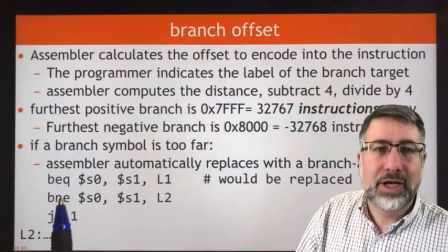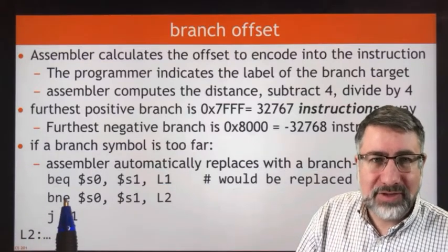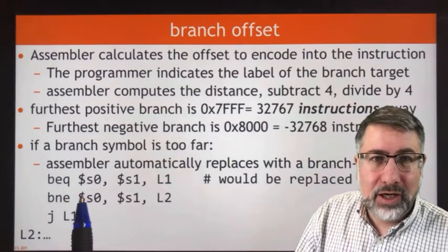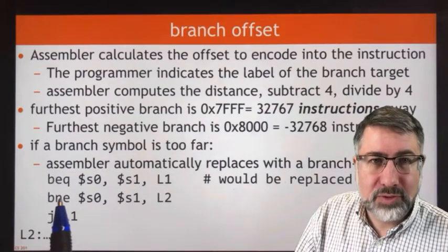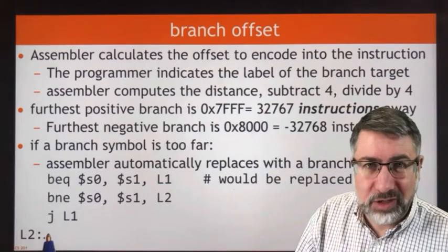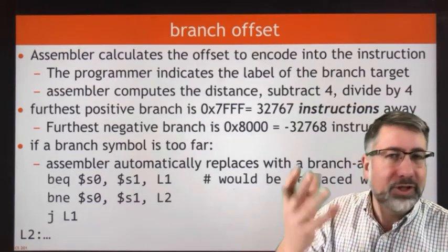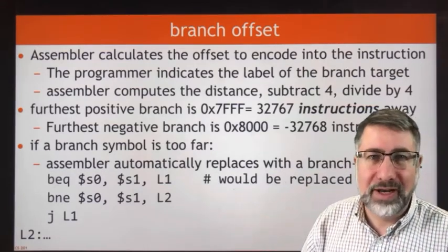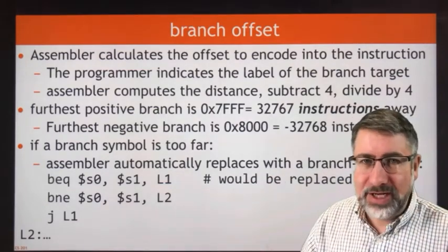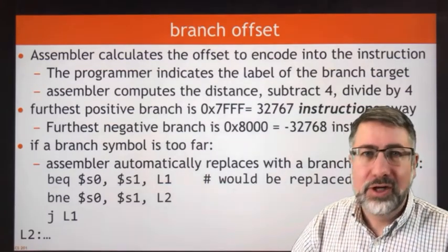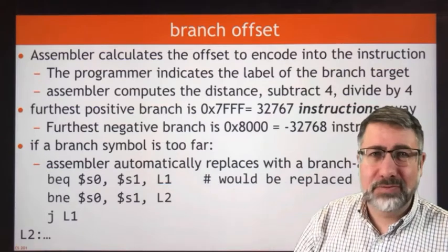Wrapping this jump in a conditional branch basically turns it into a branch, but we have to test on the opposite condition. Because if we want to branch on equality, we're basically jumping on equality, which means we're skipping the jump on non-equality. That's why MIPS uses branch equal and branch not-equal — they're opposite conditions and it's very easy to switch between one and the other. This should never need to be done because the distance you want to branch is usually far closer than 32,000 instructions.